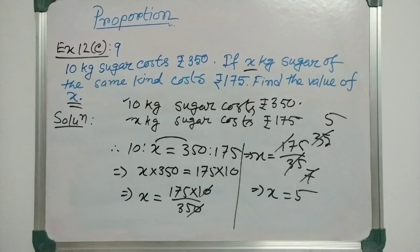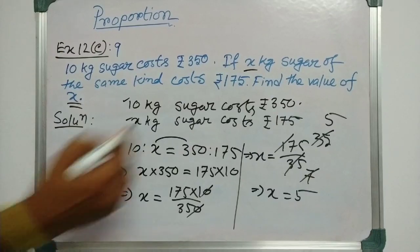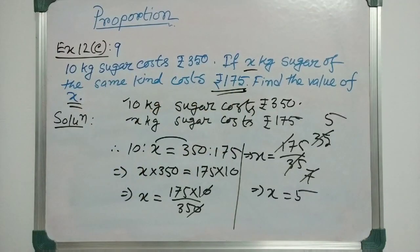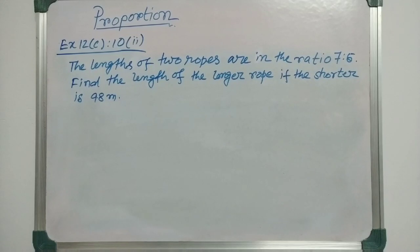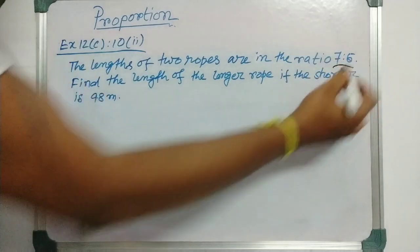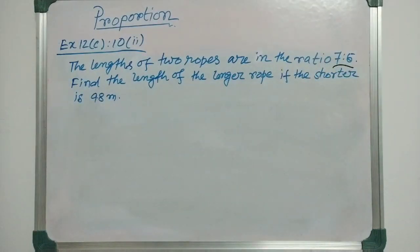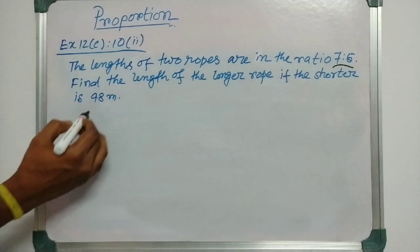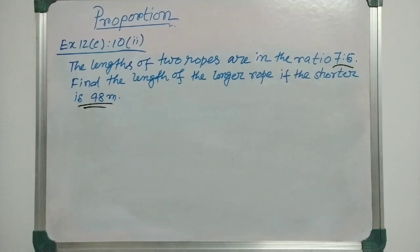This implies that 5 kg sugar costs rupees 175. Now, let us move to question number 10 sub part 2, the same exercise. The question is: the lengths of 2 ropes are in the ratio of 7 is to 5. Find the length of the longer rope if the shorter one is 9.8 meter.